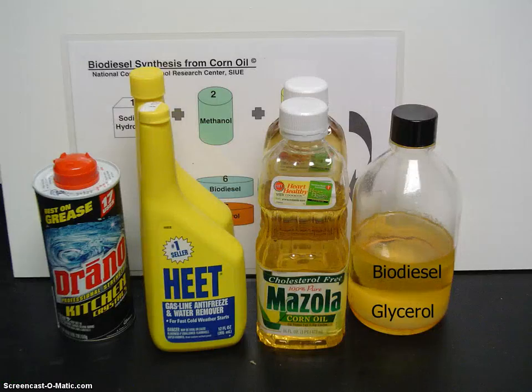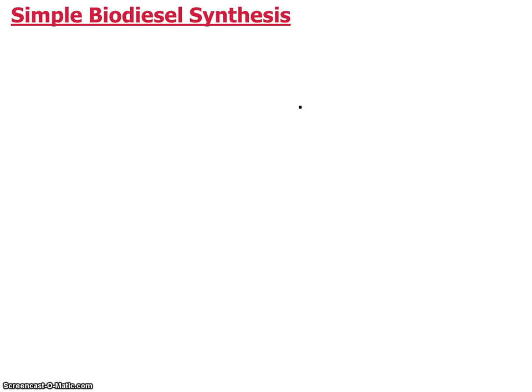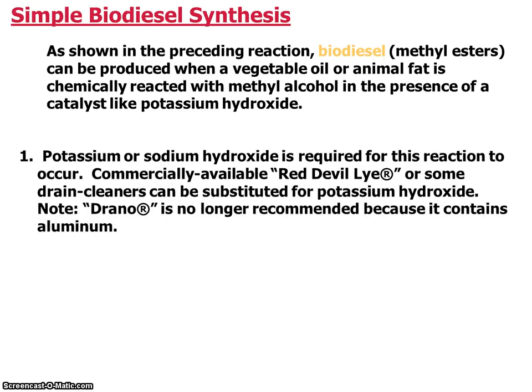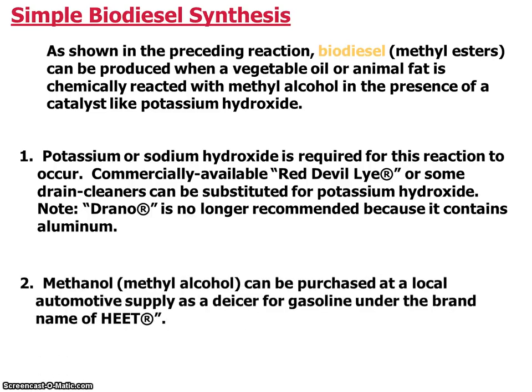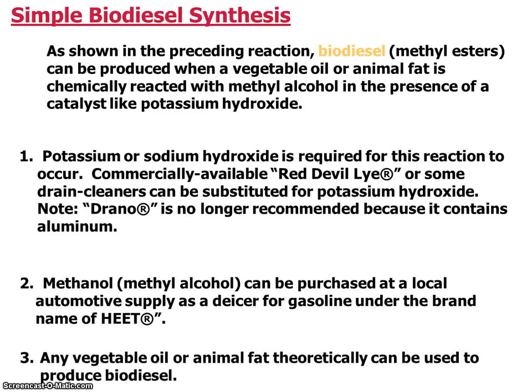These are just some over-the-shelf type items that you could purchase to make biodiesel. Biodiesel methyl esters can be produced when the vegetable oil or animal fat is chemically reacted with methyl alcohol in the presence of a catalyst like potassium hydroxide. Potassium or sodium hydroxide is required for this reaction to occur. Potassium hydroxide is commercially available as Red Devil Lye. The methanol can be purchased at a local automotive store as a de-icer for gasoline such as HEAT. You can use any vegetable oil or animal fat to produce biodiesel.